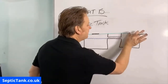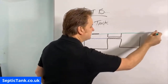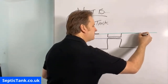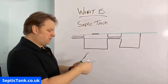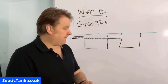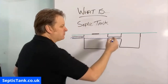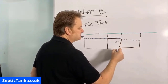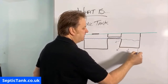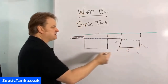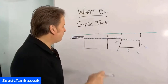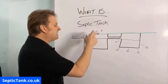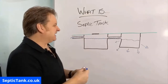A soak away is basically a hole in the ground or some kind of product into which the liquid from the septic tank goes and then soaks away into the soil. So the key difference between a septic tank and a cesspool is that the septic tank has an outlet as well as an inlet.